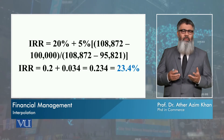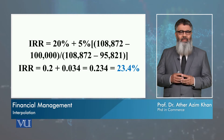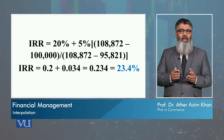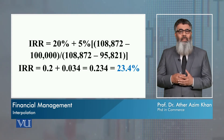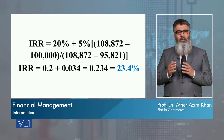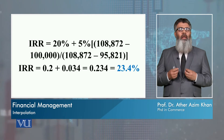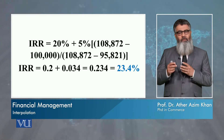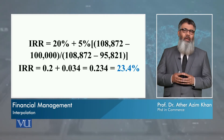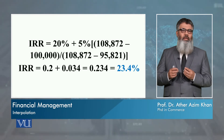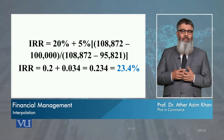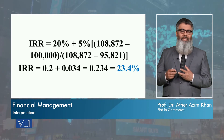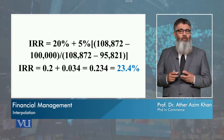This fraction will come out to something like 0.67, 0.33, or 0.45 — a value between 0 and 1. That fraction is then multiplied by 5%, which is the difference between the two rates interpolated. So 20% — or 0.2 in decimal — plus the fraction multiplied by 5%, gives an answer of 0.034. Adding them both gives 0.234, which in percentage is 23.4%. This is the value we call the IRR.